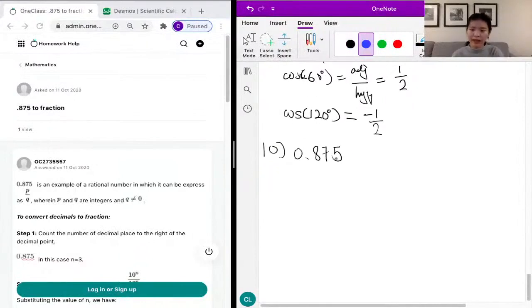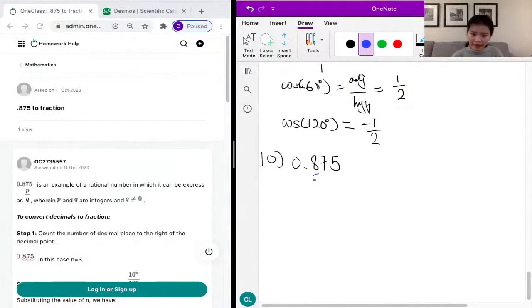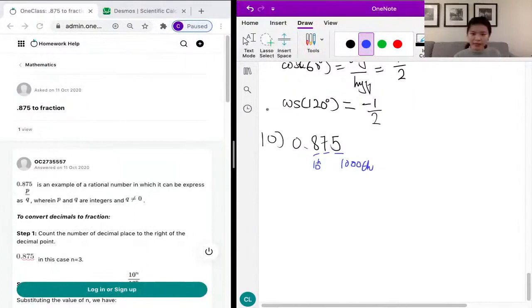We know that this is the 10th place, the 1st is the 10th place, the 7 is on the 100th place, and the 5 is on the 1,000th place. So in this case, we just need to take the entire number, the entire 875, and divide it by 1,000.